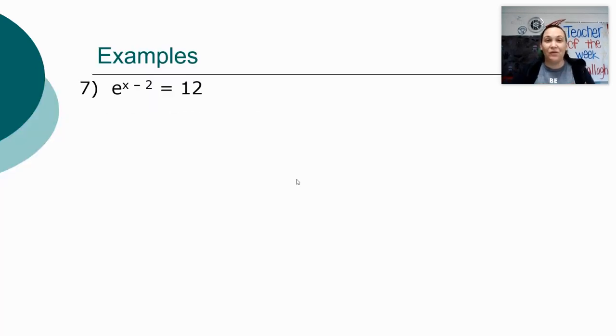We are continuing from yesterday's videos, which is why it's starting with example number seven. In this problem, I have an equation written in exponential form, e to the power of x minus 2 equals 12. Since this is currently in exponential form, my first step is going to be to switch it to logarithmic form.